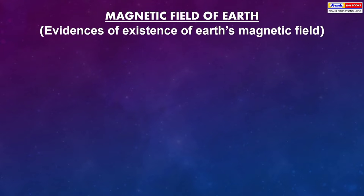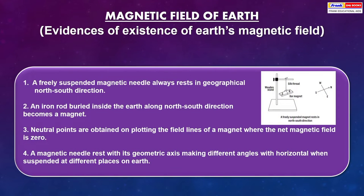Magnetic field of earth. A freely suspended magnetic needle always rests in geographical north-south direction. An iron rod buried inside the earth along north-south direction becomes a magnet.